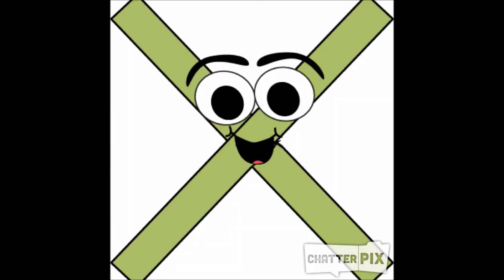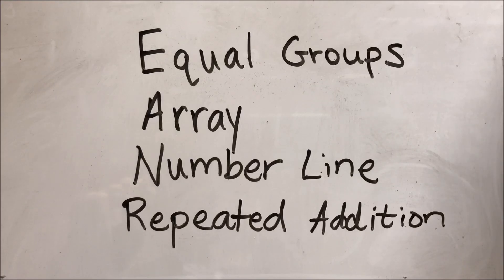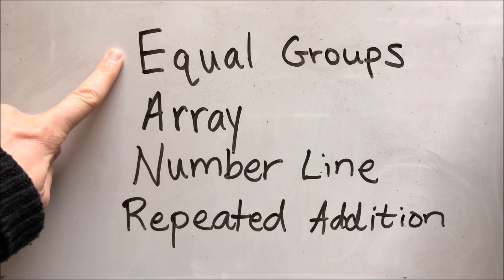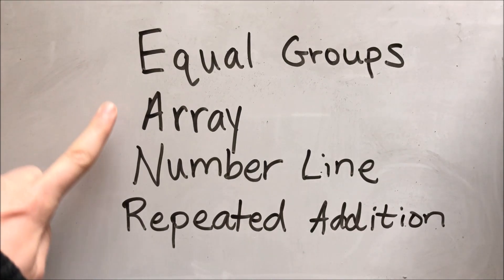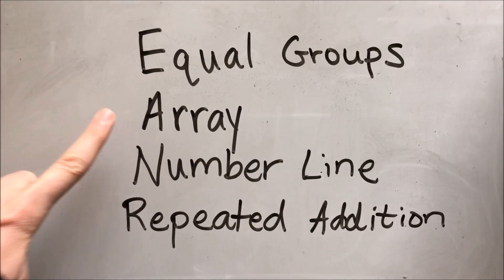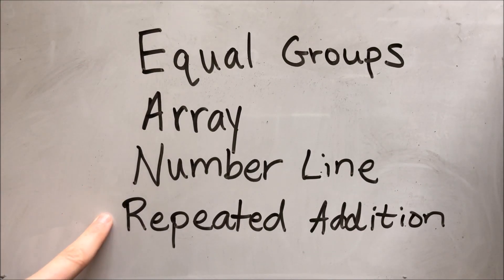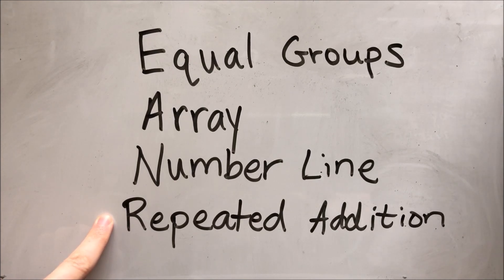To the whiteboard! In multiplication, there are four different ways that we can represent a problem: equal groups, an array, a number line, and repeated addition. Let's take a look at a picture we can use as an example.